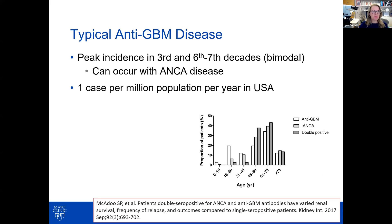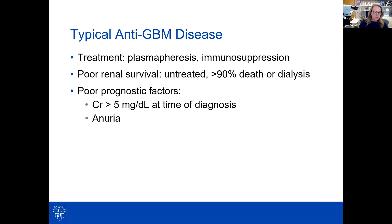The peak incidence of typical anti-GBM disease is in the third and the sixth to seventh decades of life, with a bimodal age distribution. This can occur in association with ANCA disease, especially in the older age groups. The incidence is about one case per million population per year in the U.S. Treatment involves plasmapheresis and immunosuppression. If untreated, there is poor renal survival and poor patient survival — more than 90% death or dialysis. Poor prognostic factors include high creatinine at the time of diagnosis and anuria at presentation.